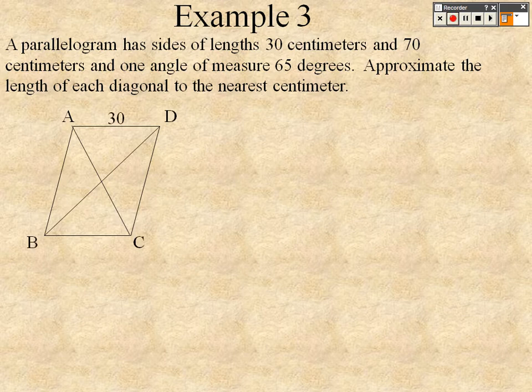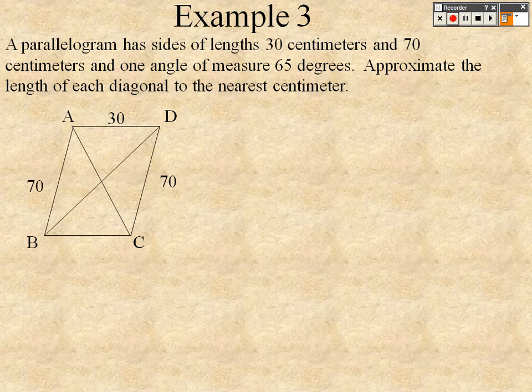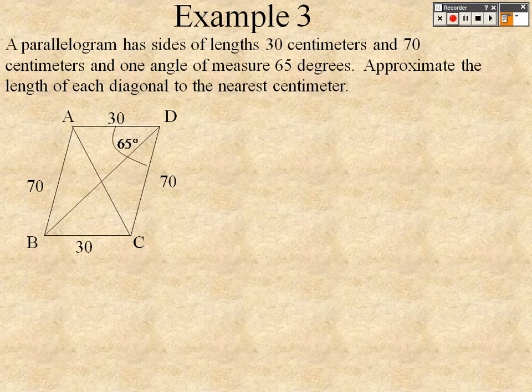Okay, so those are 30, and those are 70, that's what we know. We also know that one angle of measure is 65 degrees, so that whole thing there is 65, that whole angle D is 65 degrees.